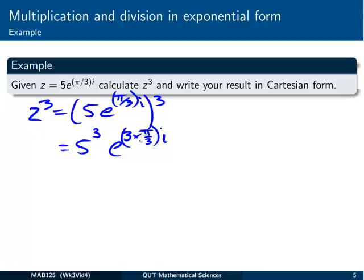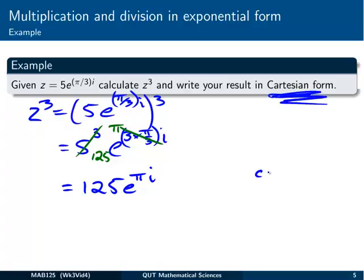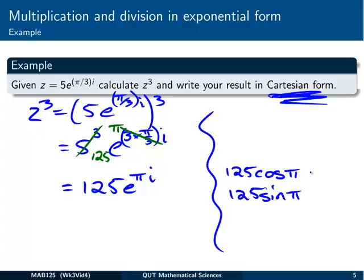We can do a little simplifying. 3 by π/3, that's just π. And 5 to the 3, that's 125. So, final result, 125e^(πi). Ah, not final result. Again, we've got Cartesian form, so make sure we do that. e^(πi), that's just cos π. So we've got 125 cos π is our real part. And 125 sin π, that's our imaginary part. Cos π is minus 1, so that's minus 125.